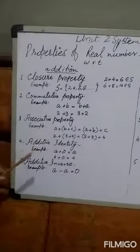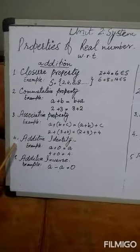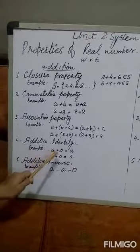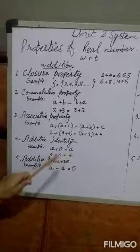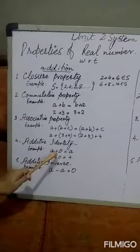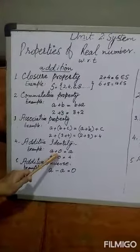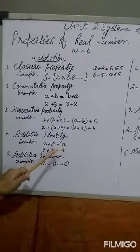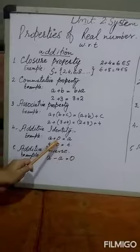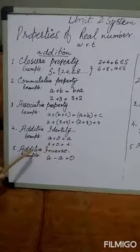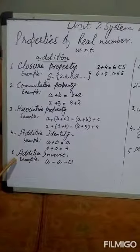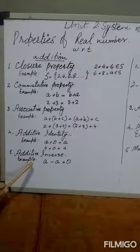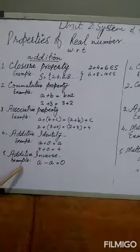The next property is additive identity. For any real number A: A plus 0 equals A. Here 0 is also a real number, and adding 0 to any real number gives the same real number back. So 0 is the additive identity.